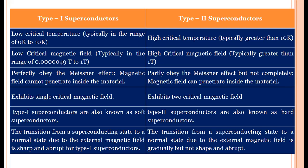In type 1 superconductors, the critical temperature is low, approximately up to 10 Kelvin only. But type 2 superconductors have a higher critical temperature, that is more than 10 Kelvin. Type 1 superconductors have a lower critical magnetic field, so they transition to ordinary conductors even under very low intensity magnetic fields. But type 2 superconductors have a high critical magnetic field, making them useful for preparing strong electromagnets.